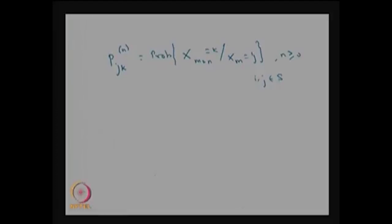Since the underlying DTMC is time-homogenous, this is the n-step transition probability of the system moving from state j to state k in n steps. We denote this as the conditional probability p(j,k) in n-step transition probability, where i, j belong to S, S is the state space, and n is greater than or equal to 0.